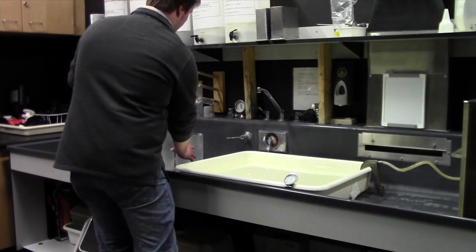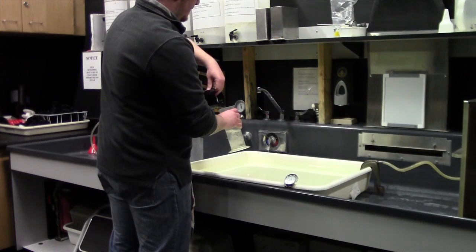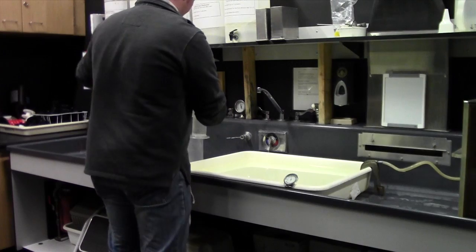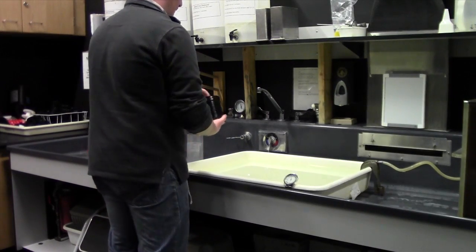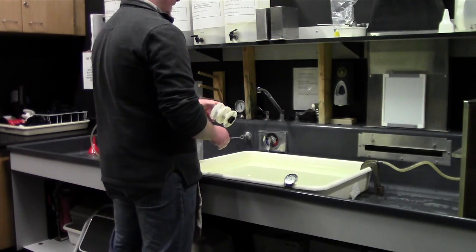When you're done, pour the photo flow back into the cylinder. Carefully pull your film out and let it drip over the sink a little bit. And then take it over to the film dryer to dry your film.